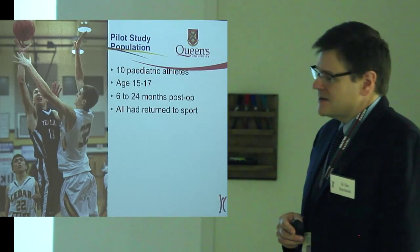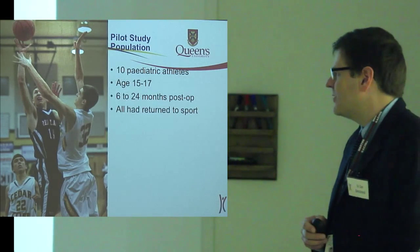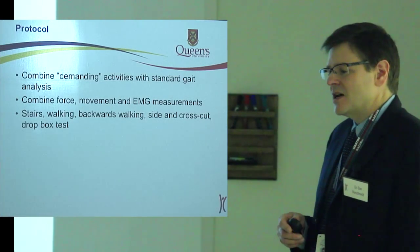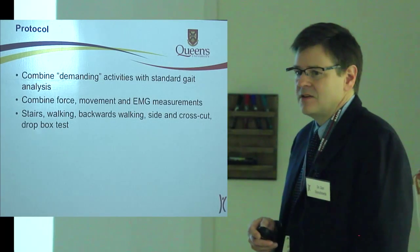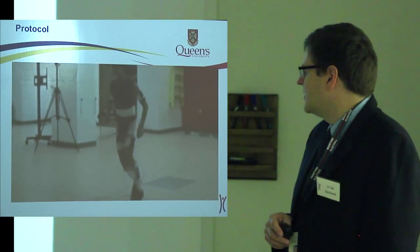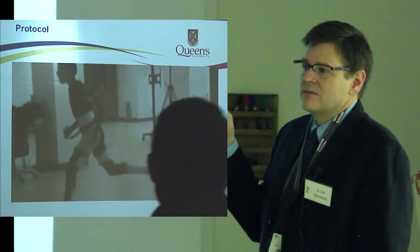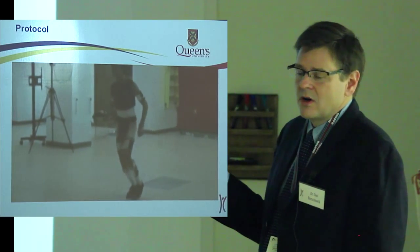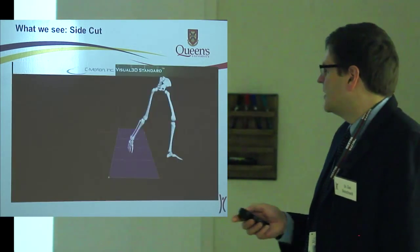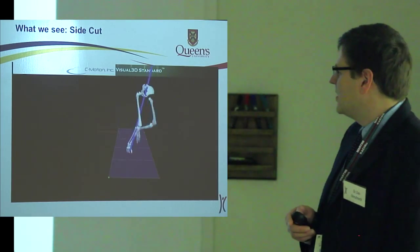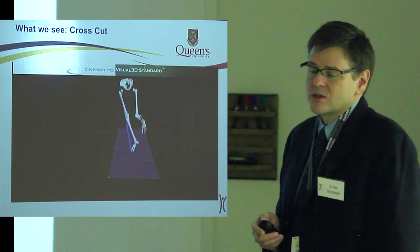This study on ACLs looked at a pediatric population — 10 children aged between 15 and 17, all after surgery, all having returned to sport. This was the first study where we looked at demanding activities. Here's a subject running toward a screen. An arrow flashes on the screen telling them to pivot left or pivot right — they don't know which way they're going. So there's a sudden maneuver. We can record a side cut — moving away from the planted foot — or a cross cut where he's moving toward the side he's cutting on. Those arrows are diagrams of force going through his knee and body.